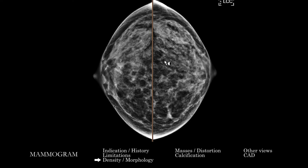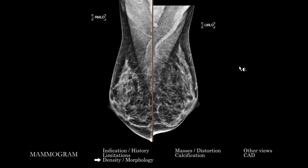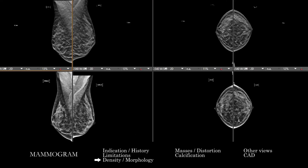It can be useful to know the context of what was previously described and changes over time. As we look at the MLO and CC, you want to get a sense of overall symmetry and if there has been a change in the overall density or appearance of the breast compared to prior — the prior is up here and the current is down here. It's good practice to go back at least two years, as changes can be subtle with shorter intervals.